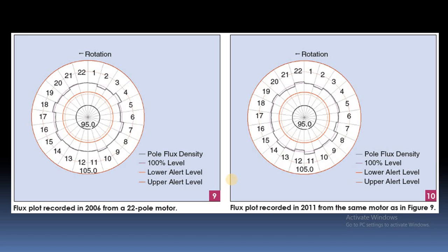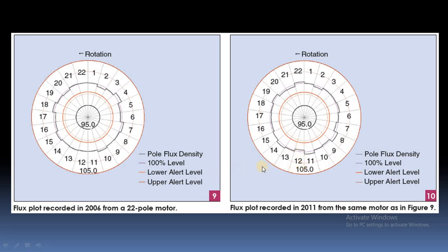Here we can see the rotor flux waveform of a motor having 22 poles. The flux density is plotted, and the inner lines represent 95% and 105% of the average flux as lower and upper limits respectively. All poles are within these limits — no pole is crossing the upper or lower limit — meaning this motor does not have any shorted turns. In this way we can determine which pole has shorted turns using the online technique.